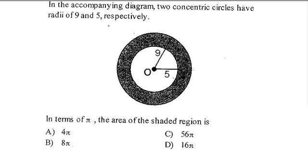All right, so here's a circle question dealing with concentric circles, which just means circles built around each other with the same center or origin. It says in the accompanying diagram, two concentric circles have radii, or that's more than one radius,